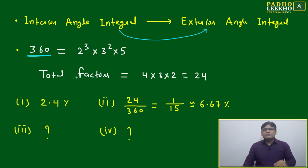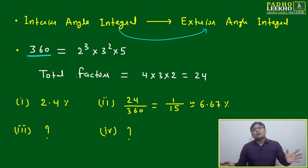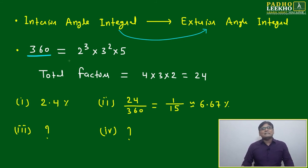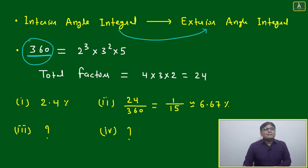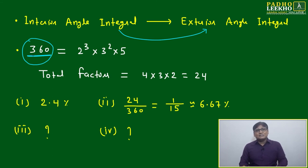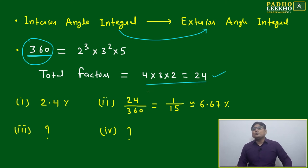Whether you take a triangle, rectangle, quadrilateral, pentagon, hexagon, heptagon, octagon, nonagon — whatever polygon you take, the sum of exterior angles is always 360. Once you reframe your thinking around this, you immediately get the constraint. Factorize 360: 2³ × 3² × 5, giving a total of 24 factors. These 24 factors are the only values that will make the interior angle integral.